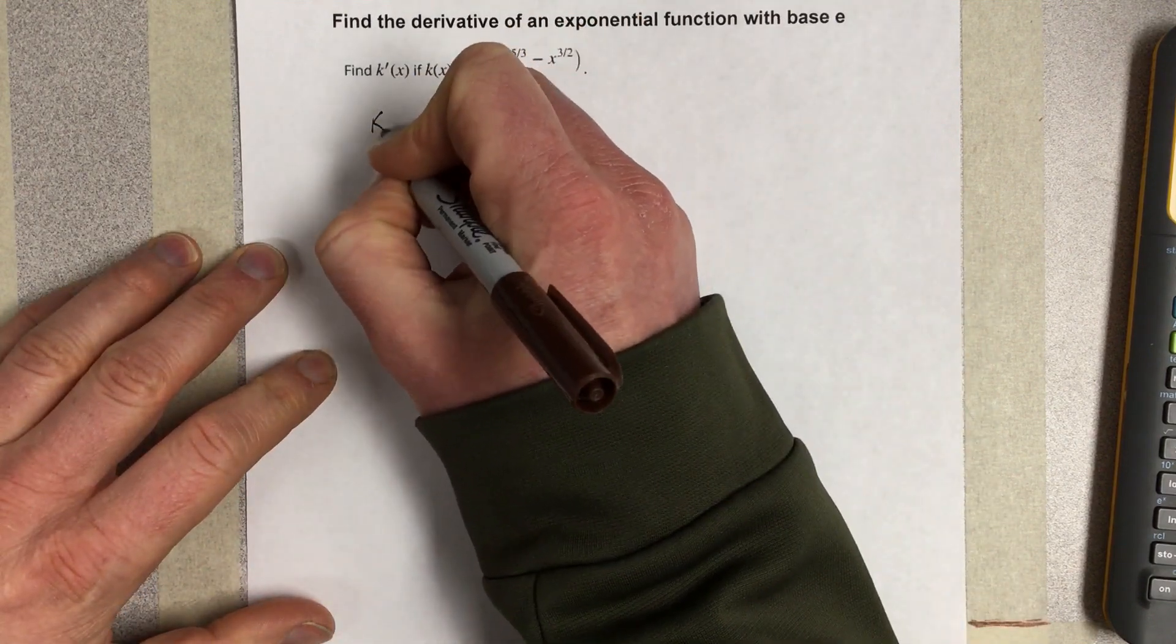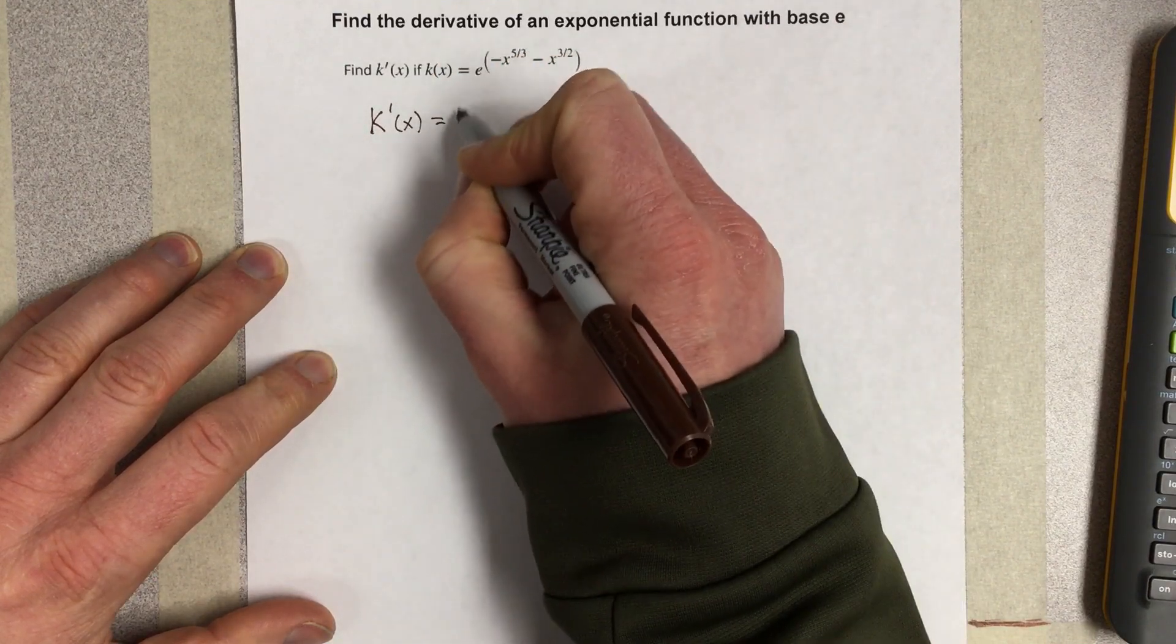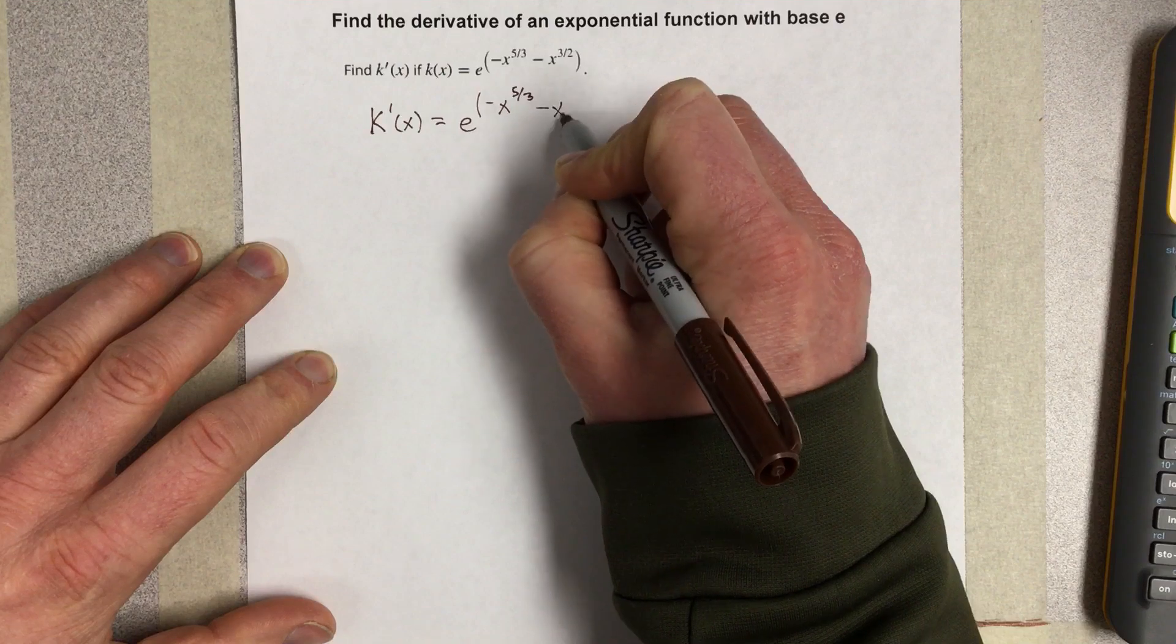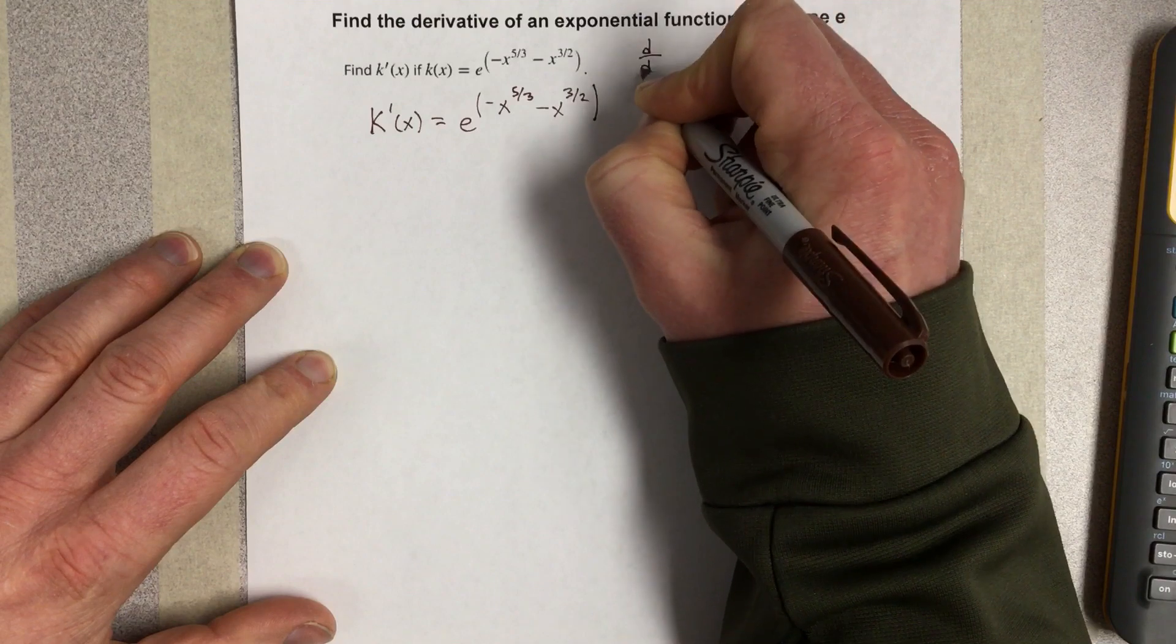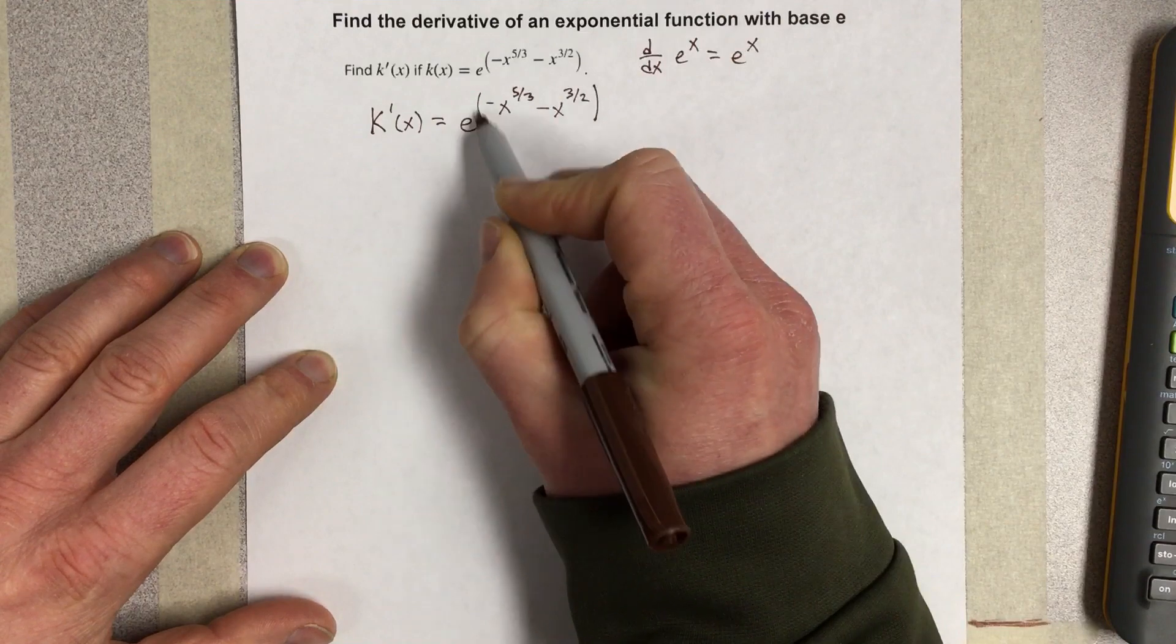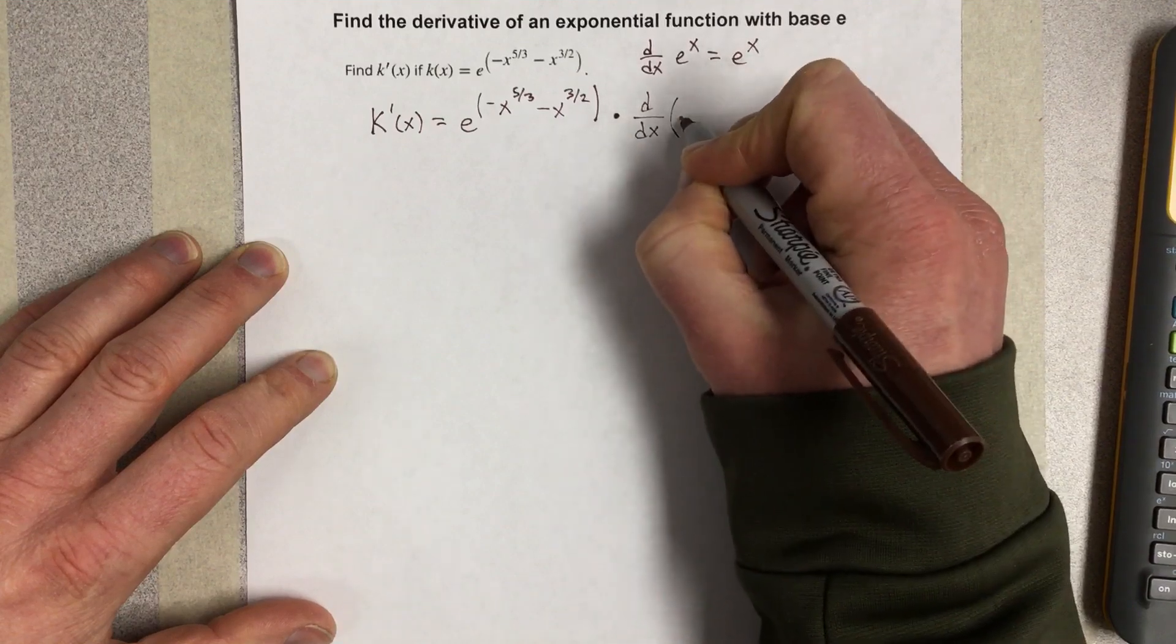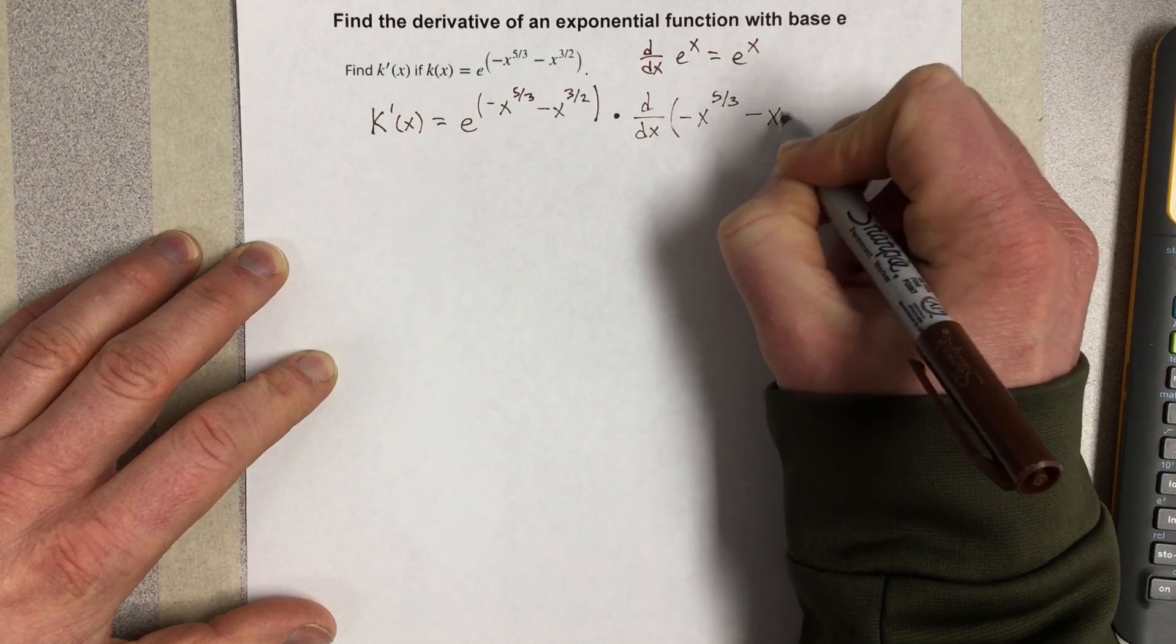So we're going to say that k prime of x using chain rule would equal e to the negative x to the 5 thirds minus x to the 3 halves. I said that because the derivative of e to the x is itself e to the x. So I'm doing the derivative of the outside. Nothing's going to change there but I have to take it times the derivative of the inside which is negative x to the 5 thirds minus x to the 3 halves.